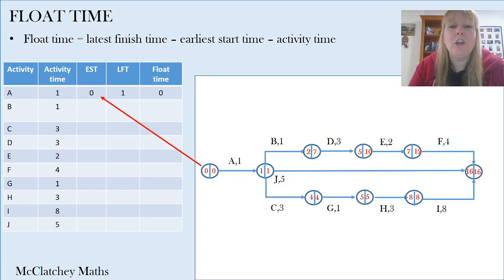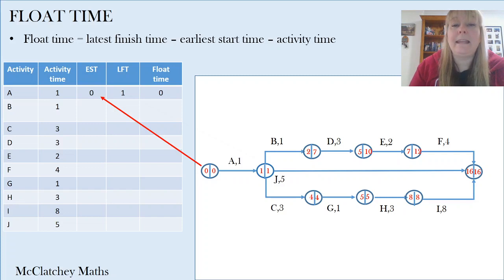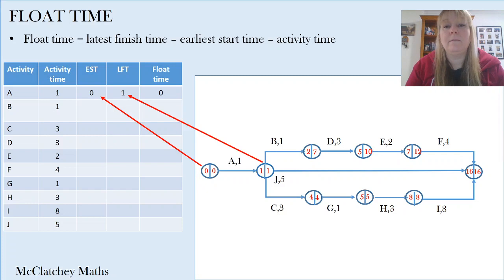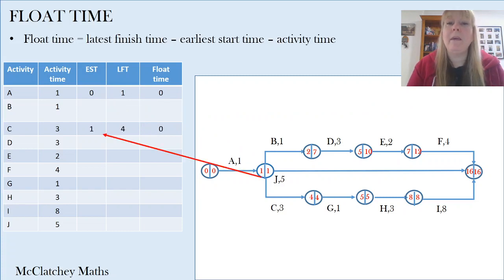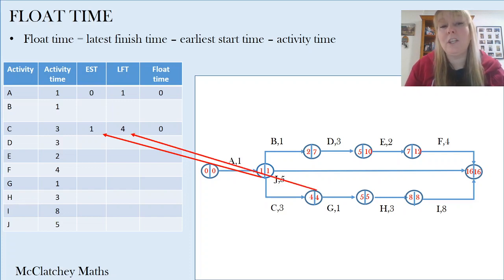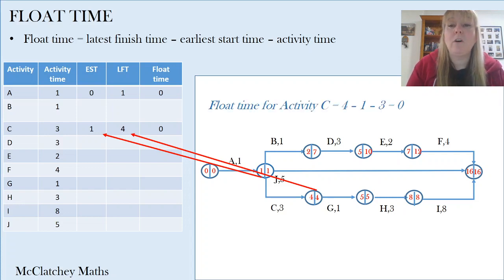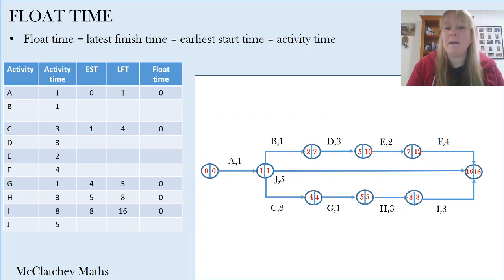For activity A, the earliest start time comes from the previous vertex on the left-hand side — that's zero. The latest finish time comes from the next vertex on the right-hand side. So the float time for activity A equals 1 (latest finish time) take away 0 (earliest start time) take away the activity time — which proves the float time is zero, as expected on the critical path. We can do the same for activity C, pulling the earliest start time from the vertex before C and the latest finish time from the vertex where C finishes. Float time is also zero, as it is for all activities on the critical pathway.